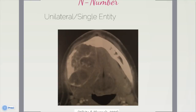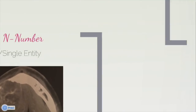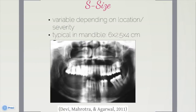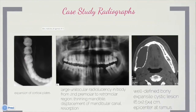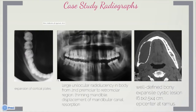Aneurysmal bone cysts generally appear as a large unilateral single entity. The size of ABC is variable depending on location and severity; a typical lesion in the mandible is 6 by 2.5 by 4 centimeters. Shown are the radiographs from the case study of the 25-year-old from Rama University. The lower right occlusal radiograph shows expansion of the cortical plates. There is a large unilocular radiolucency in the body shown in the pantomograph, which also shows displacement of the mandibular canal. The CT scan shows the large expansile cystic lesion at the center of the ramus.